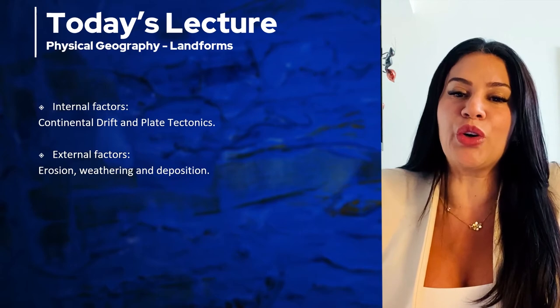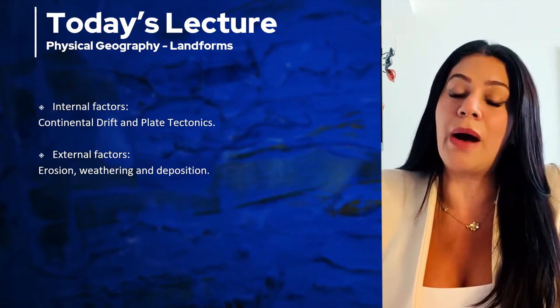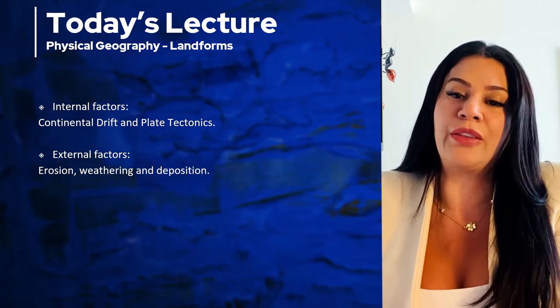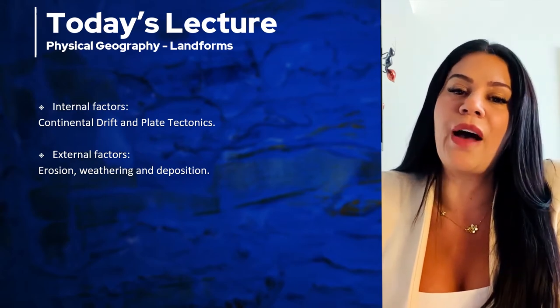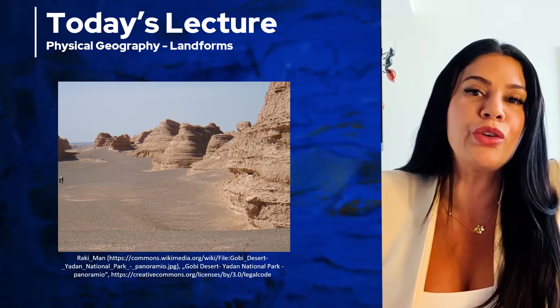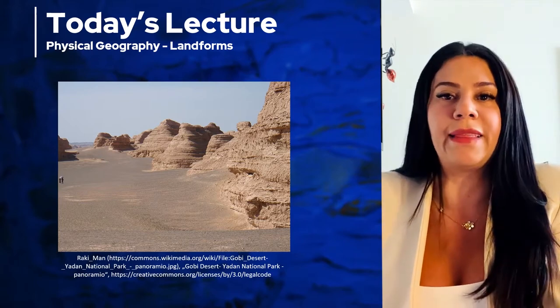Hi, Dr. Mirna again. Welcome to our second lesson in this introduction to geography course. Today we're going to start with the physical geography part. In this lesson we're going to talk about how the mountains have been created. We'll mainly talk about two issues: the internal factors and the external factors that shape the earth. The internal factors are continental drift and plate tectonics, and the external factors are weathering, erosion, and then deposition.